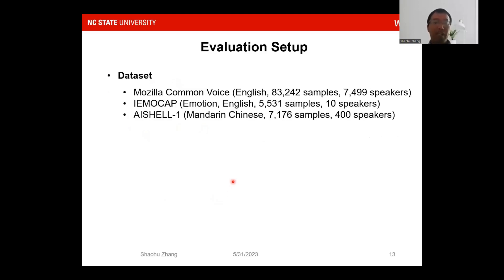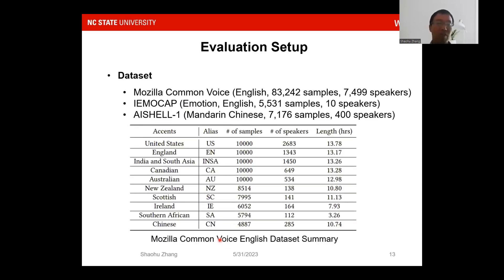To evaluate our system, we implement our model on three open-source datasets. The first is the Mozilla Common Voice English dataset. The second is the IEMOCAP Emotion dataset. The third is the AISHELL-1 Mandarin Chinese dataset. For example, the Mozilla Common Voice English dataset includes 10 accents, such as United States, England, and Chinese accent.